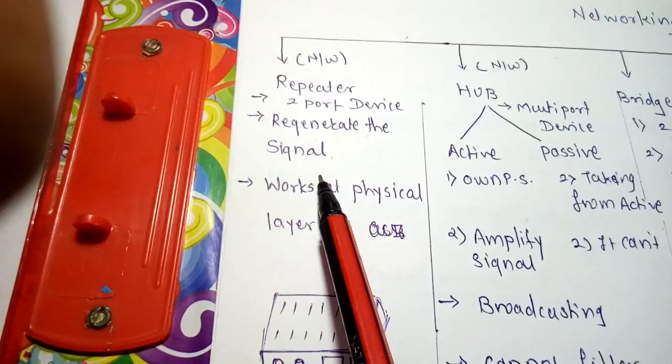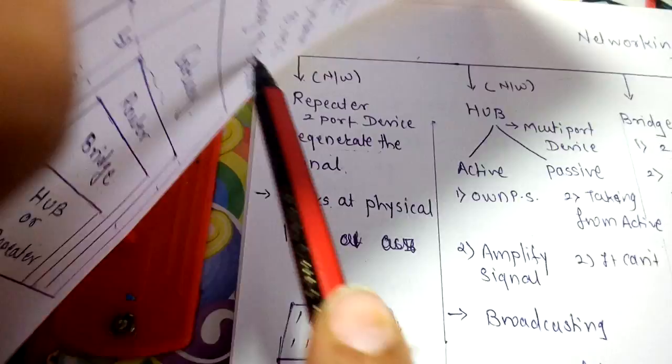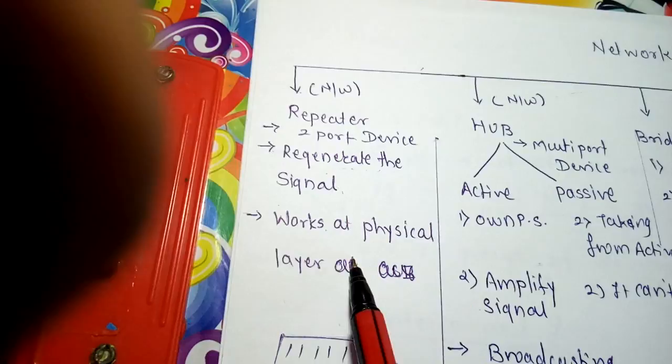And it works at the physical layer, that is the first layer. This is actually the device of the repeater where we can connect from one to another to regenerate the signal.